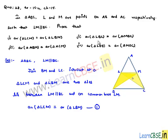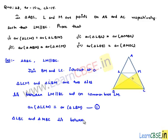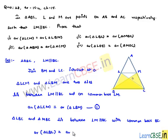For the second proof, we need to prove that area of triangle LBC is equal to area of triangle MBC. Triangles LBC and MBC lie between the two parallel lines LM and BC, with common base BC. Therefore, area of triangle LBC is equal to area of triangle MBC. This is the second proof.